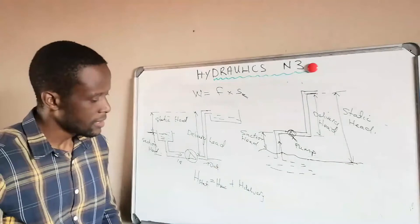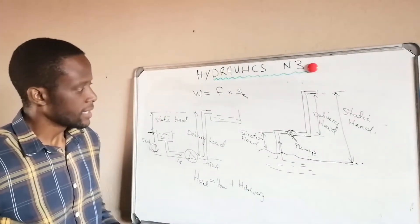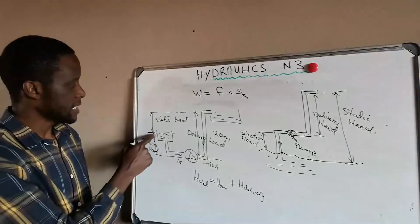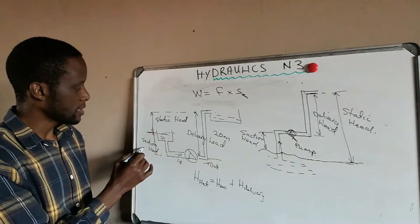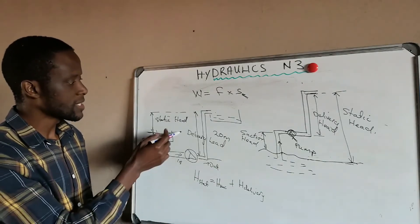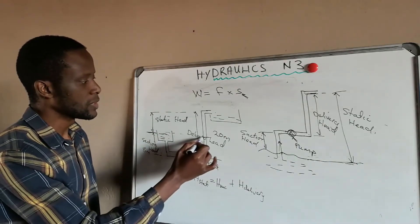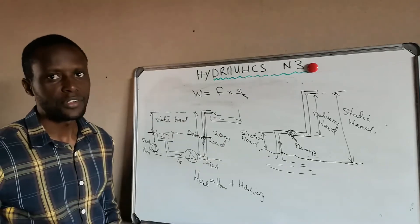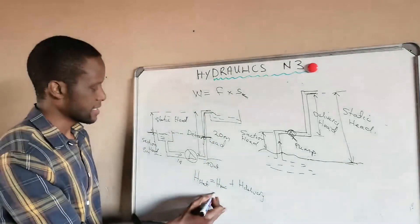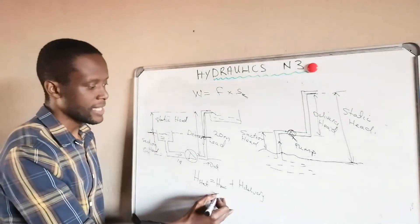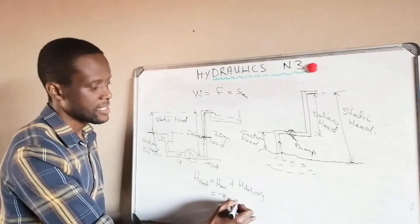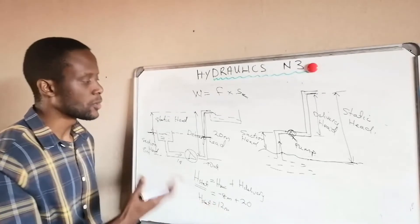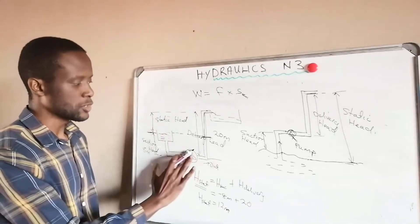For example, if in the diagram the delivery head is 20 meters and the suction head is 12 meters, the static head equals suction head plus delivery head. However, in a case where the water source is at a suspended height above the pump — with a suction head of negative 8 meters and delivery head of 20 meters — the static head equals negative 8 plus 20, which equals 12 meters.